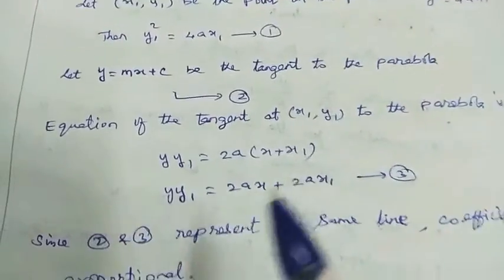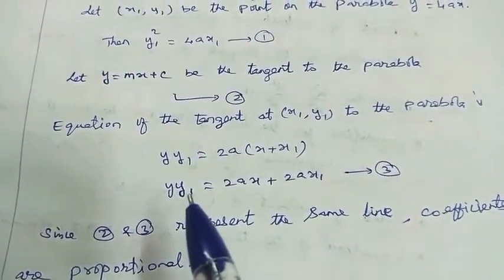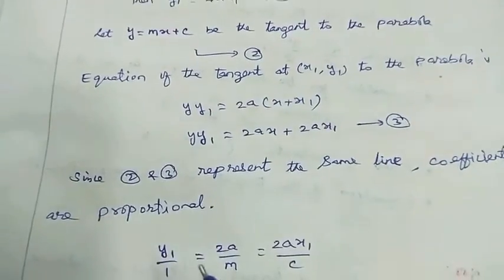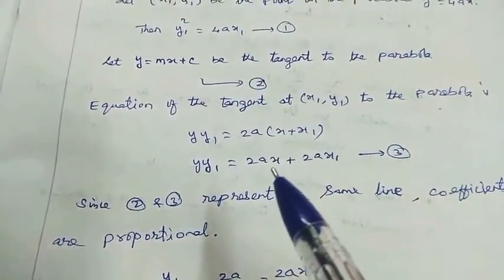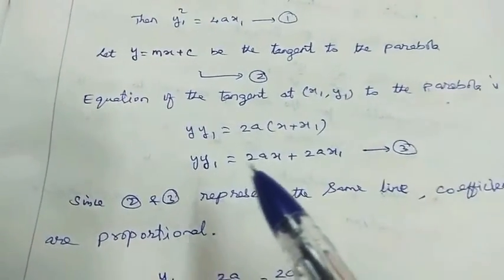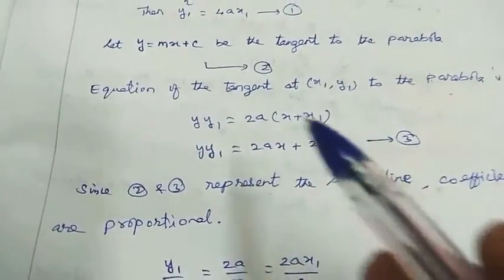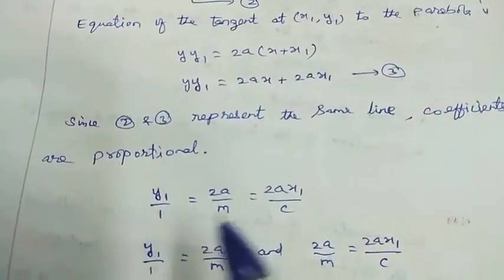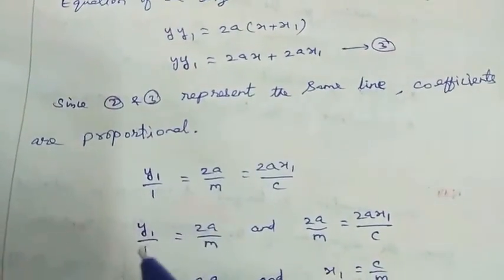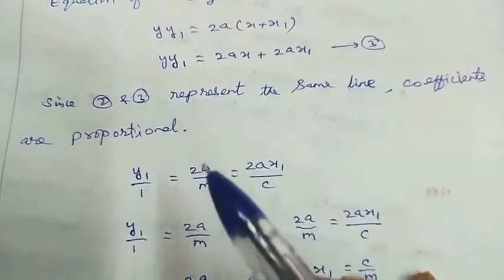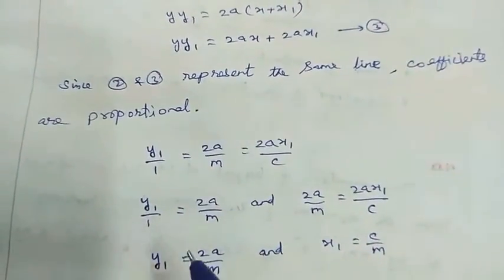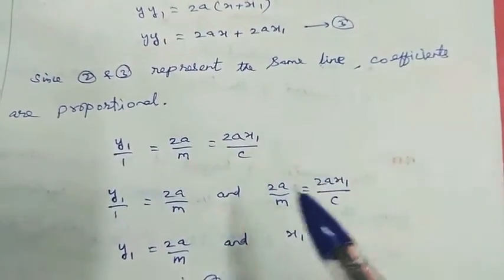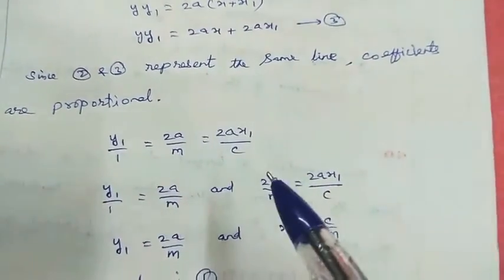These two lines are proportional. Taking the ratio of equation 3 to equation 2: the y terms cancel, giving y1 divided by 1. For the x term: 2a x1 divided by c. After cancellation, x1 equal to c by m.